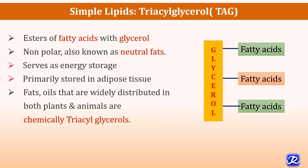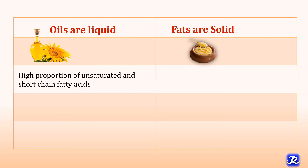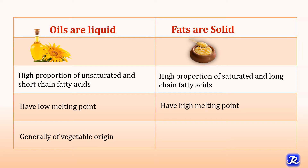Fats and oils, which are widely distributed in both plants and animals, are chemically triacylglycerol. The difference between fats and oils is only physical. In oils, a high proportion of unsaturated and short-chain fatty acids are present, while in fats, which are solid in nature, a high proportion of saturated and long-chain fatty acids are present. Oils have a low melting point and fats have a high melting point. Oils are generally of vegetable origin, like sunflower oil and soya bean oil, while fats are mainly of animal origin, for example ghee.